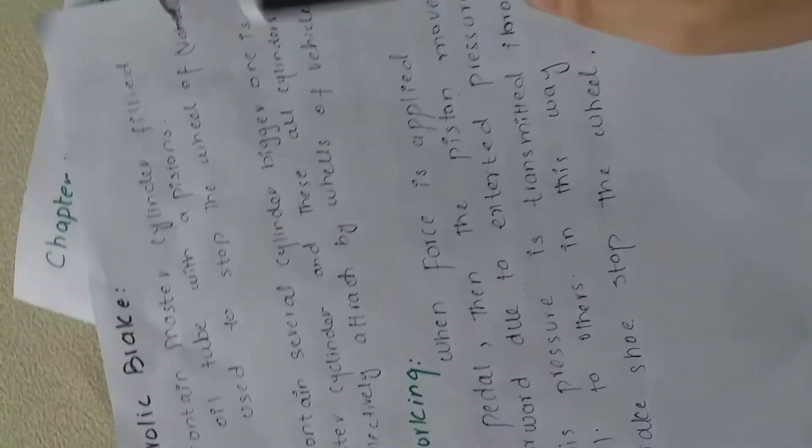It contains several cylinders. As I told you there are many cylinders, but the main cylinder is the master cylinder. The bigger one is the master cylinder and all these cylinders are collectively attached by the wheel of vehicles.